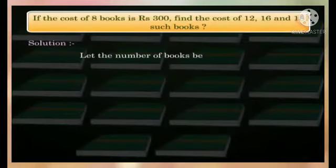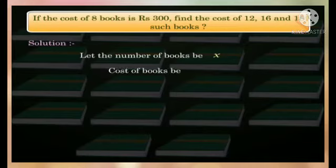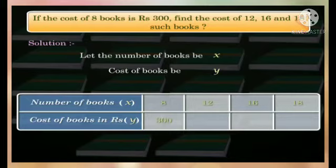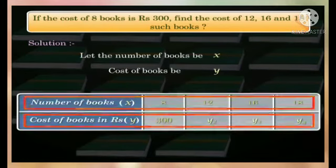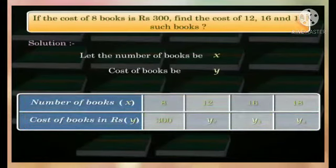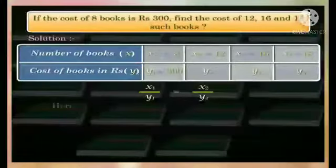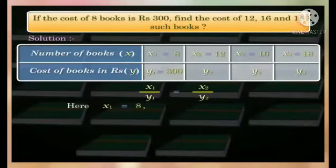Solution. Let the number of books be x and cost of books be y. Let us frame the table for the given data. Let us assume the unknown quantities as y2, y3, and y4. As the number of books and cost of books are in direct proportion, we use the relation x/y = x1/y1 = x2/y2. Here, x1 = 8, y1 = 300, and x2 = 12.